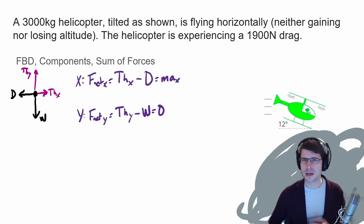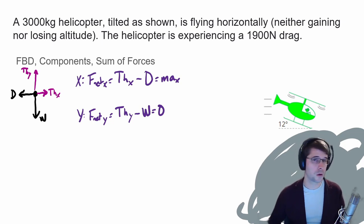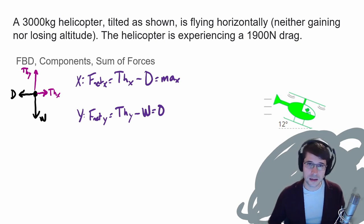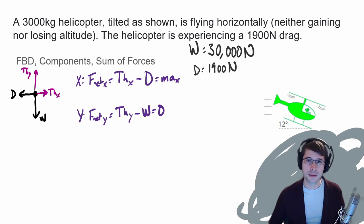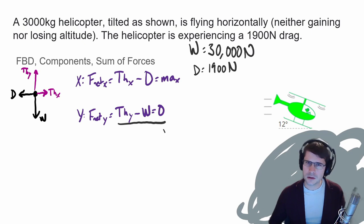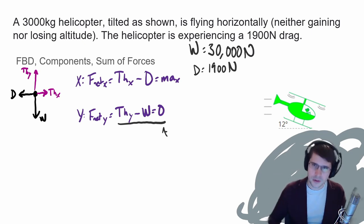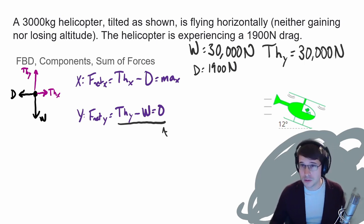It's always helpful to start with the names of the forces before getting into the numbers. First, let's find the weight force. Weight equals mg, and since the mass of the helicopter is 3,000 kilograms, the weight is 30,000 Newtons. The drag force is given as 1,900 Newtons. Next, since the Y component of thrust equals the weight, the Y component of the thrust is also 30,000 Newtons.